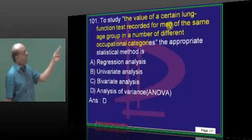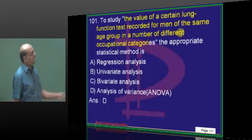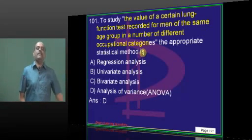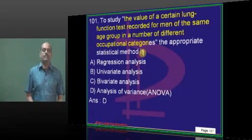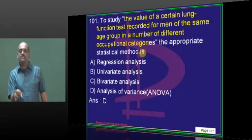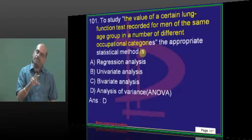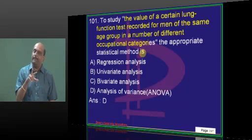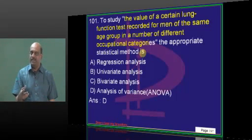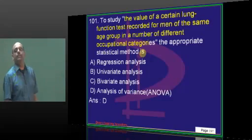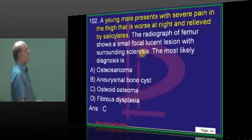If you want to know the value of a particular lung function test recorded for men of the same age group in different occupation categories, what test do you want to use? If there are only two categories and you are comparing proportions, you will do chi-square. If you are comparing mean values with only two groups, you will do Student's t-test. If multiple groups are there, you have to do analysis of variance — ANOVA.